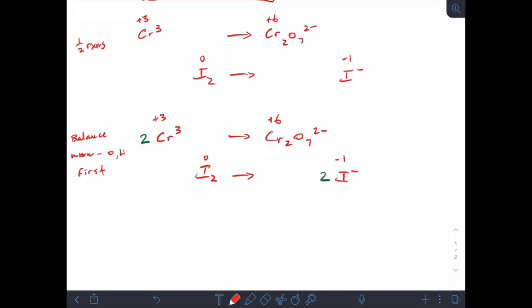So now I need to add electrons to the more positive side, or in other words, the side that has the more positive oxidation state. So I've got 2Cr3+, and that goes to Cr2O7 2 minus. Plus 3 and plus 6. Now, this is where you want to pay attention to how many chromiums are being changed.